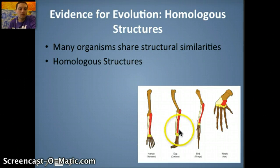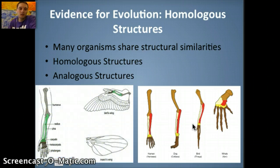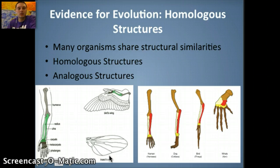Humans are more closely related to dogs and whales since we're all mammals, and birds are less closely related, but we still share similar features in our arm bone structure due to a common ancestor. The opposite of that are structures that are similar in function but different in fundamental structure and not from a common ancestor — for example, a bird's wing and an insect's wing are both used for flight, but birds and insects are not closely related. These similar structures are due to similar selective pressures in the environment, not a common ancestor.